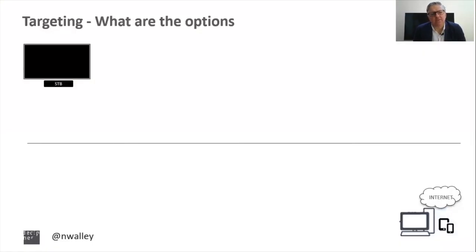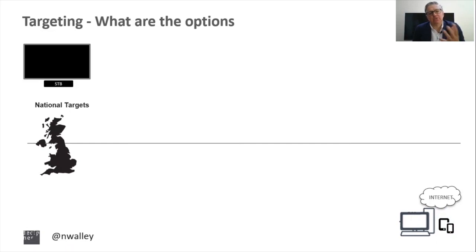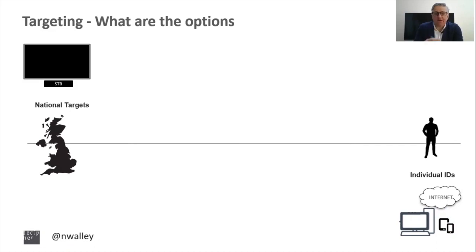The big screen world needs at least a combination of audience and server measurement, so we're seeing new models appear which combine panels like Barb with server data, whereas on individual devices we're dealing with individual web measurement. The commercial implications are that big screen content is much more likely to be captured within deals, whereas quite a bit of the interesting activity in the user world is being done out of deal, and that has an implication for how money feeds into the world.